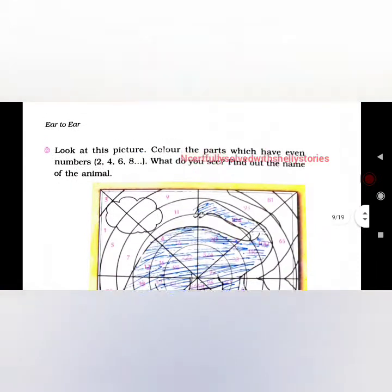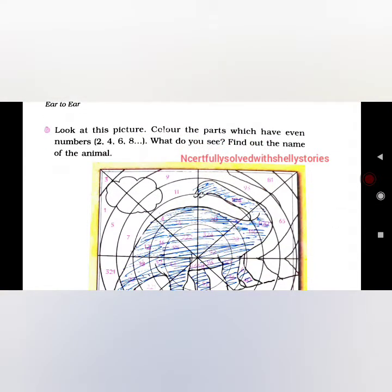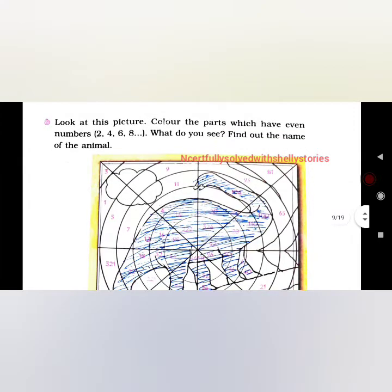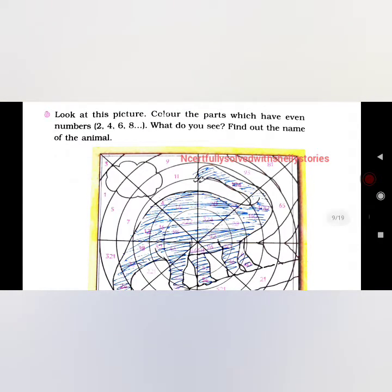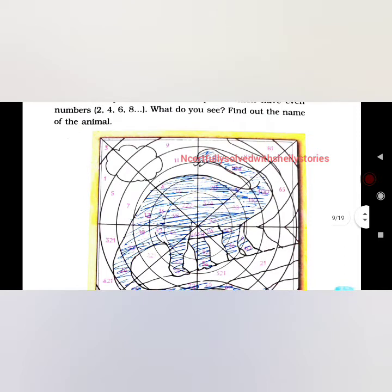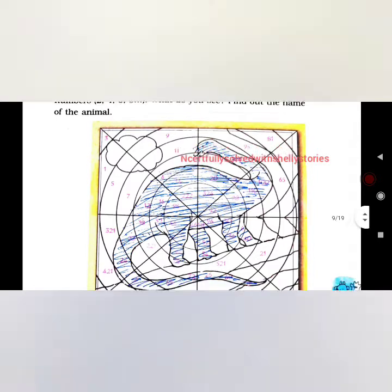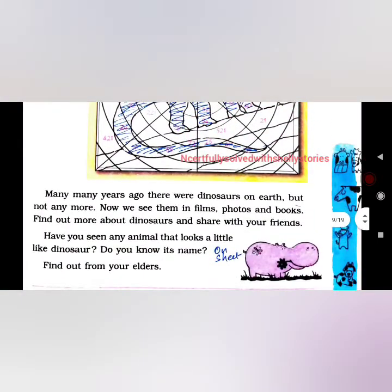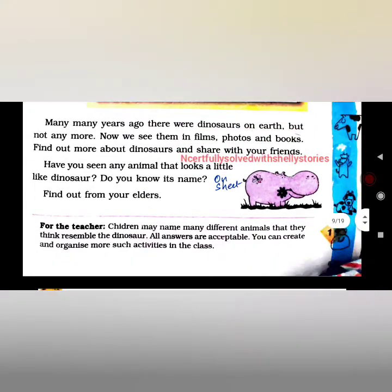Look at this picture and color the parts which have even numbers — 0, 2, 4, 6, 8. When I colored those numbers, it became a small dinosaur. Many many years ago there were dinosaurs on earth, but now they are not. We only see them in movies, photos, or books. Find out more about dinosaurs and share with your friends.